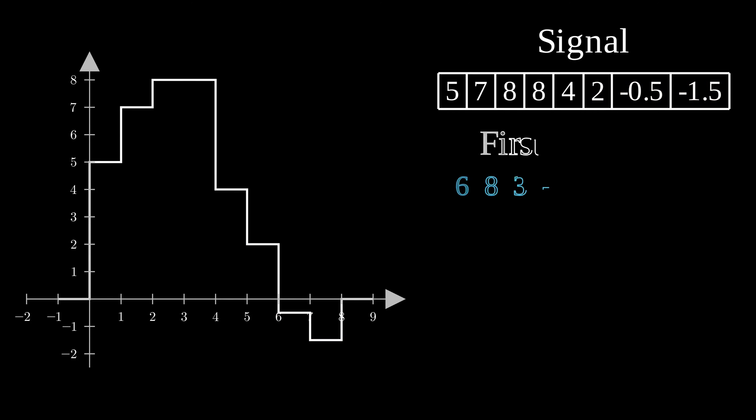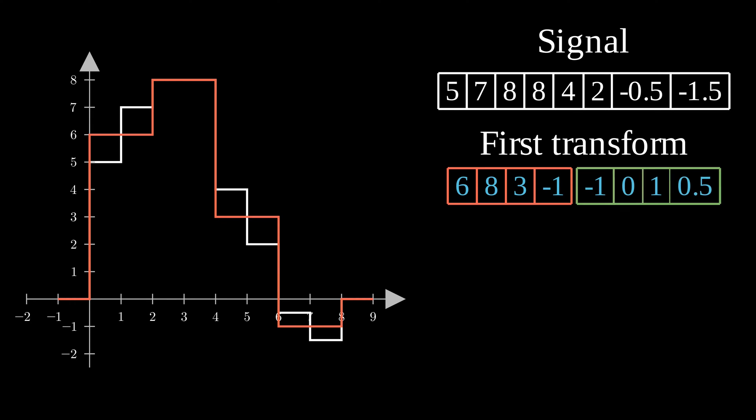As before, we compute our transformation. The approximation space represents a new step function, with half as many steps as the original one. And the new detail space is also composed of 4 values, representing the differences between the steps of the approximation space and the steps of the original signal.